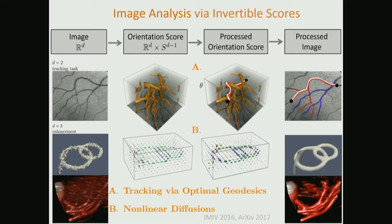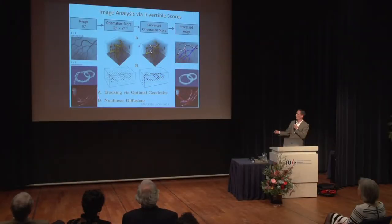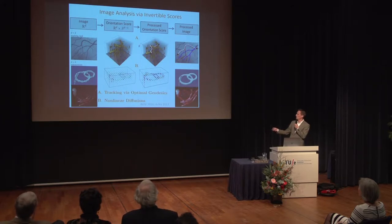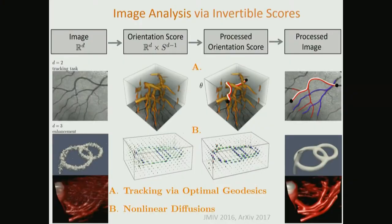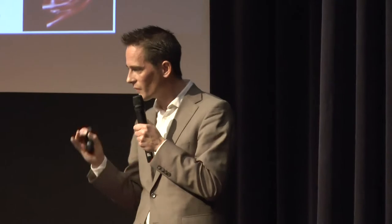For 3D images of low contrast — for example, the renal arteries from 3D X-ray images — we use crossing-preserving or geometry-preserving diffusions in position and orientation space. This allows you to denoise these images and get a much clearer view of the blood vessels while keeping the vessel widths and maintaining good contrast-to-noise ratios. We compare it to many other methods in the literature and achieve better results.